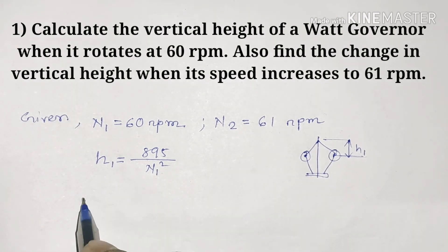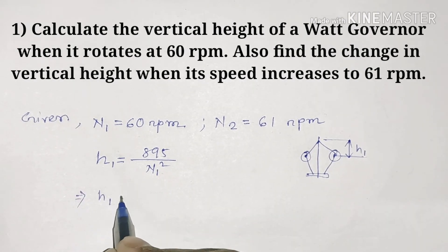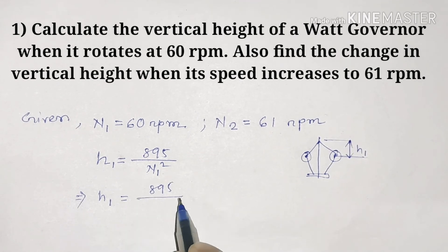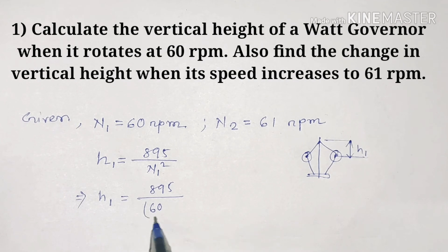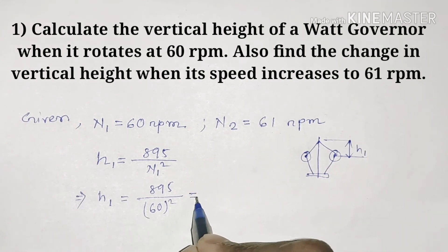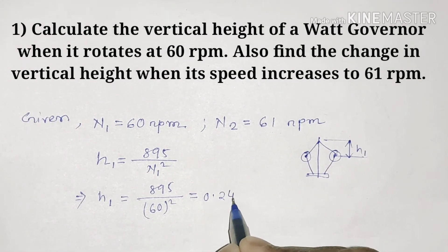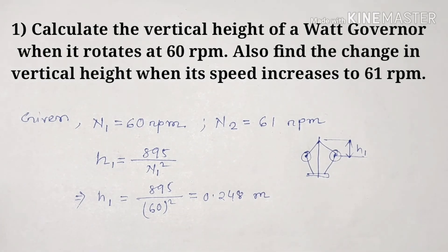What is h1 value? h1 value is 895 divided by N1 squared. N1 is 60, so we will put 60 in whole square. The answer will be 0.248 meter. This is our first condition.